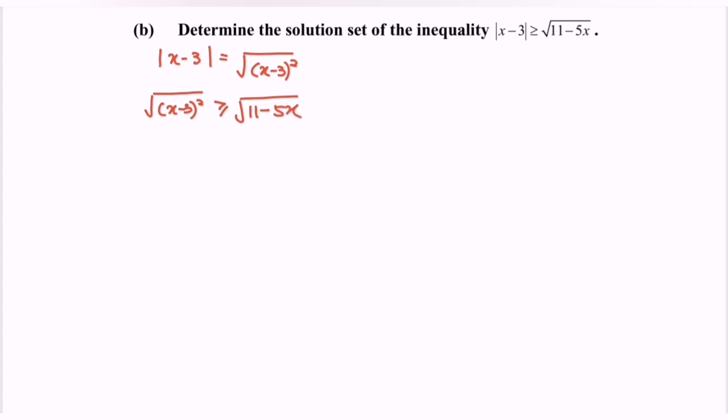Next, my suggestion will be square both sides. So if we square both sides, we will have x minus 3 bracket squared greater than or equal to 11 minus 5x.